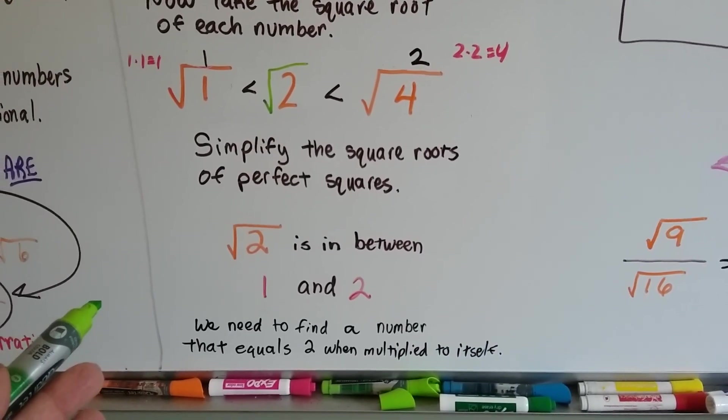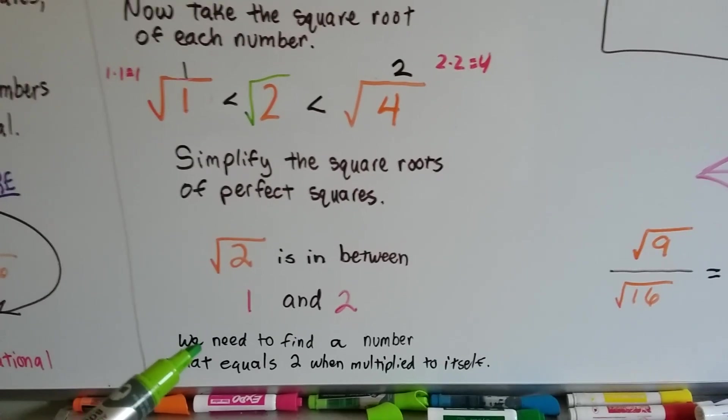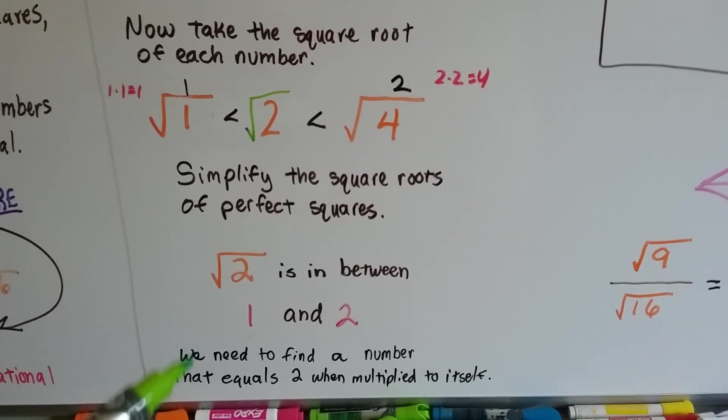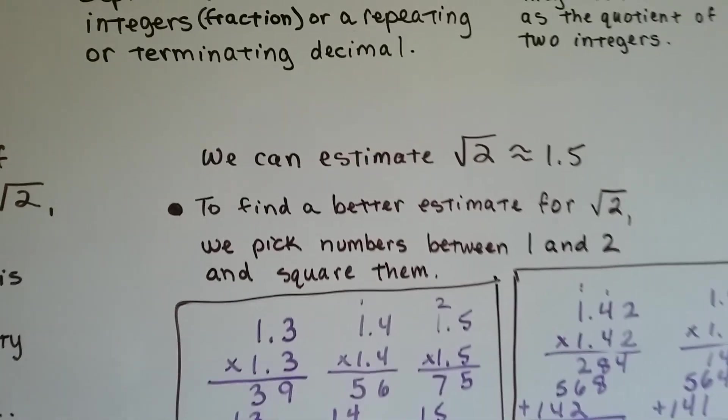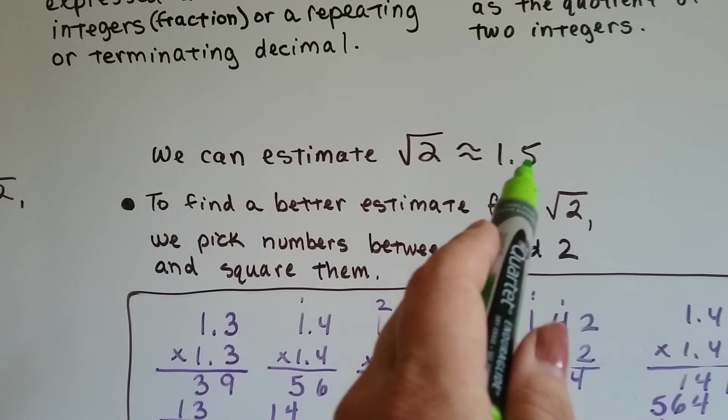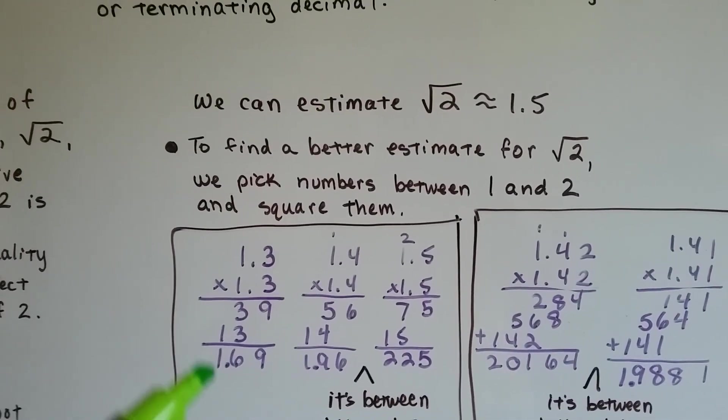We try to find a number that equals 2 when it's multiplied to itself. What times what would equal 2 when multiplied to itself? We can estimate the square root of 2 is approximately 1.5, but to find a better estimate, we pick numbers that are between 1 and 2 and we try squaring them.